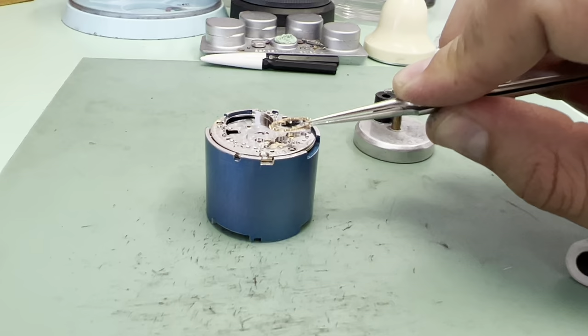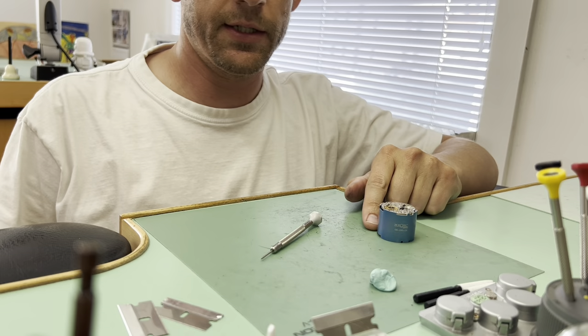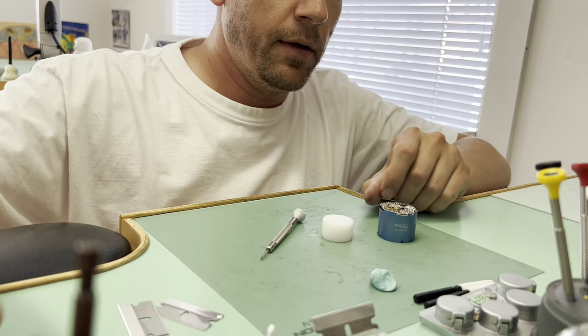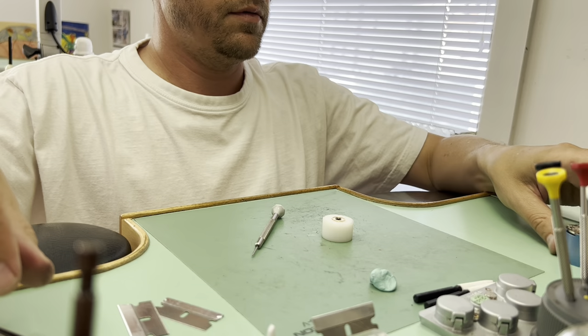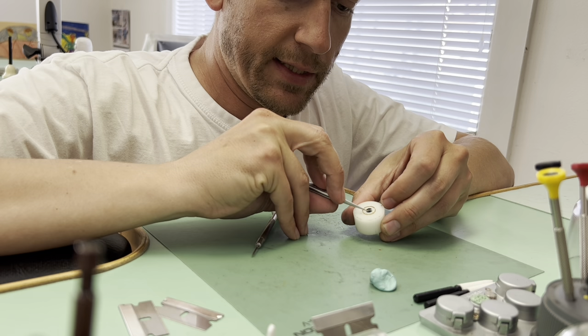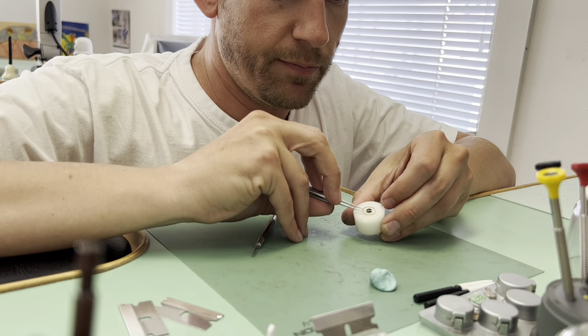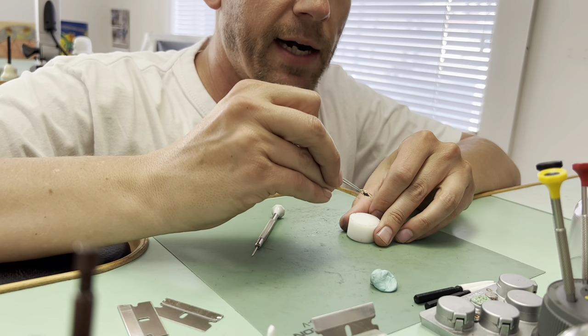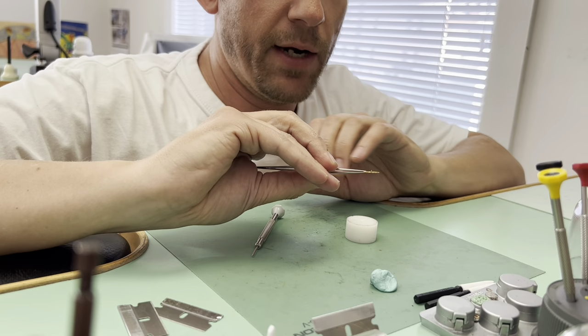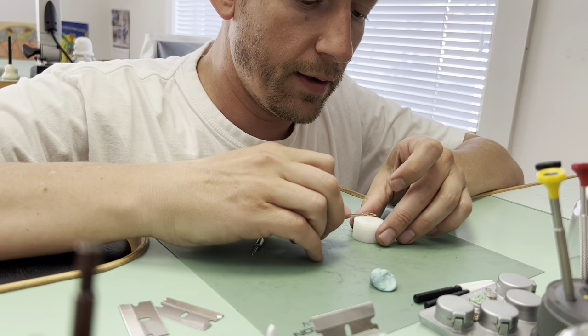Now that the balance bridge is off, we are left with the wheel. I need to mark the orientation where the hairspring stud is, that's the part that connects to the balance bridge as a fixed point. Everything on this balance wheel is going to be removed: the staff, the hairspring, and the roller table.